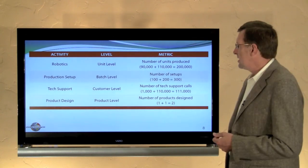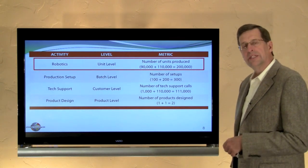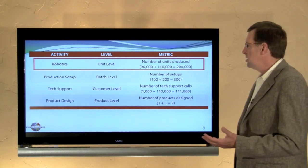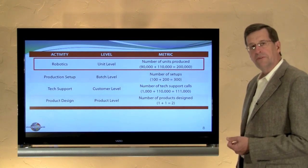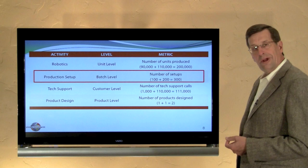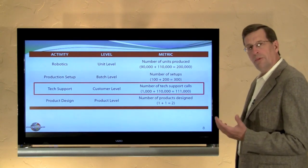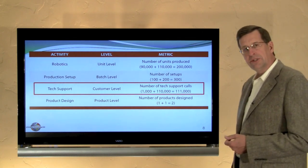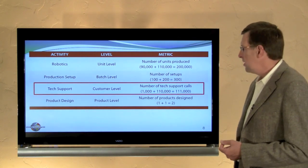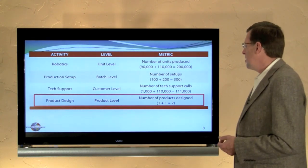Now let's analyze our activities. Robotics is a unit-level activity — we produced 200,000 units and paid rental per unit, so 200,000 units is our activity metric. Production setup is a batch-level activity with 300 total setups: 100 for Cap Player and 200 for Glasses Song. Tech support had 111,000 calls: 110,000 for glasses and 1,000 for caps. Finally, there were two product design activities, one for each product.